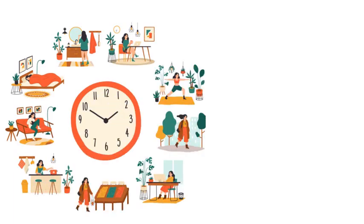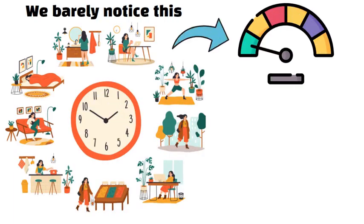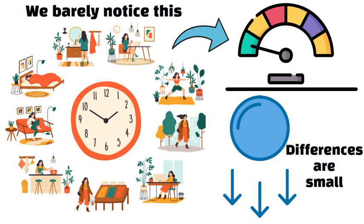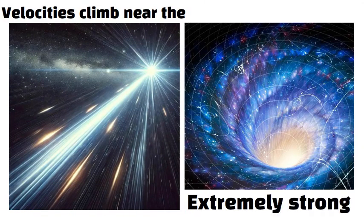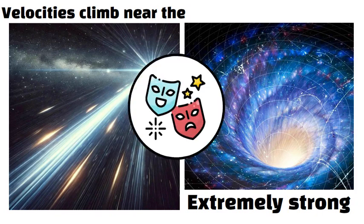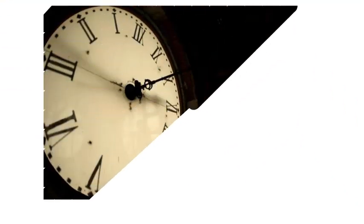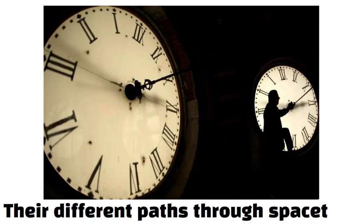In day-to-day life, we barely notice this. Our speeds are low and gravitational differences are small. But when velocities climb near the speed of light, or when gravity is extremely strong, the effects become dramatic. Two people's clocks can end up far out of sync purely because of their different paths through space-time.